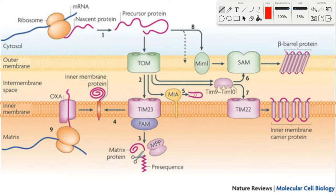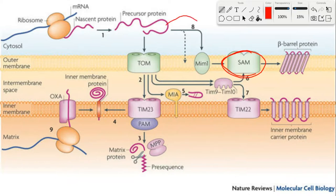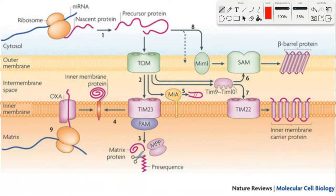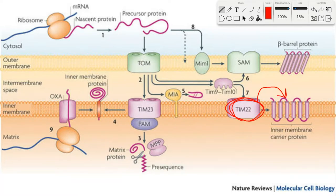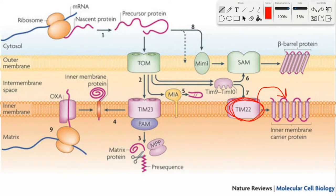Once the protein has been transported into the intermembrane space, the protein has four fates depending on where it is to end up. It can be inserted into the outer membrane through the activity of the SAM complex. Sometimes the protein can be directly inserted into the outer membrane through the MIM1 complex, without needing the roundabout pathway. It can also be inserted into the inner membrane through the action of TIM-22, which takes a protein and inserts it into the inner mitochondrial membrane. Sometimes the protein may simply want to be in the intermembrane space, not bound to anything.